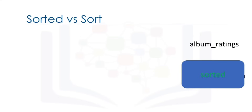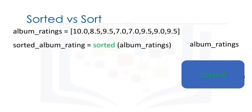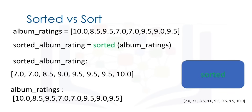There are two ways to sort a list. The first is using the function sorted. We can also use the list method sort. Methods are similar to functions. The function sorted returns a new sorted list or tuple. Consider the list album ratings. We can apply the function sorted to the list album ratings and get a new list sorted album rating. The result is a new sorted list. If we look at the list album ratings, nothing has changed. Generally, functions take an input — in this case a list — and produce a new output, in this instance a sorted list.